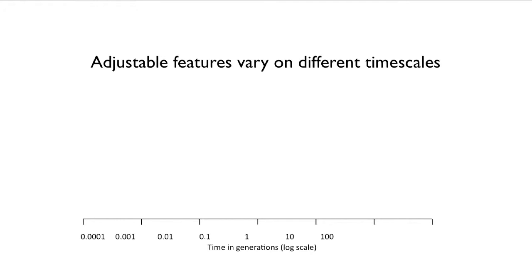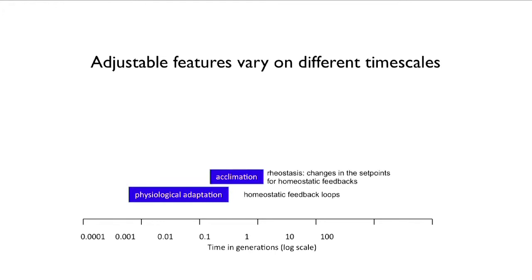Adjustable features are quite different — they vary on different time scales. Physiological adaptation occurs on a scale of seconds to days and is controlled by homeostatic feedback loops. Physiological acclimation involves the process of rheostasis — changing the set points on the feedback loops. For example, an organism that in summer has its heat thermostat set at a certain level can reset it in winter to be homeostatic at a different level.